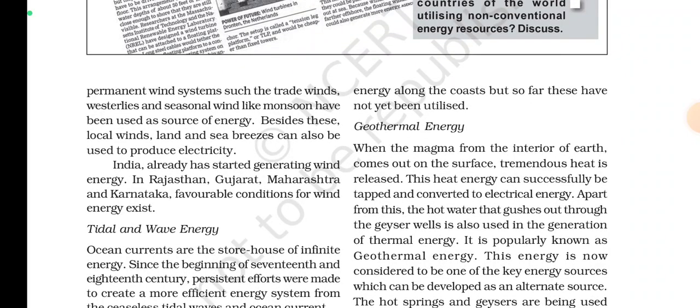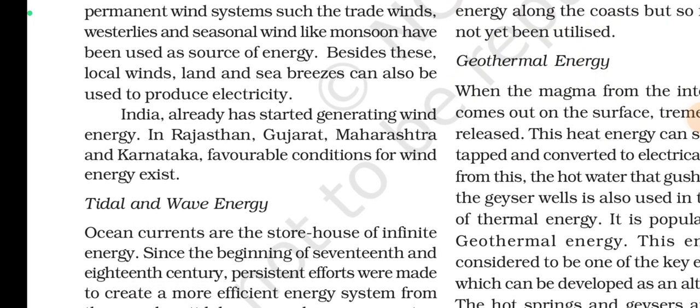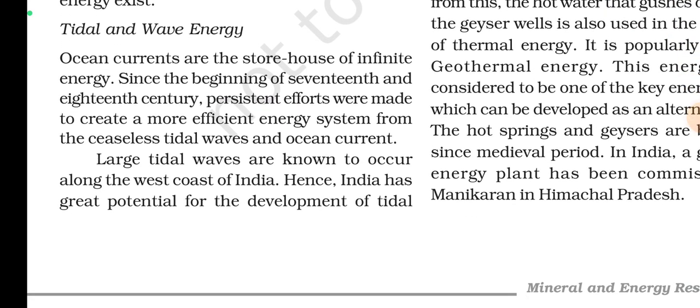Permanent wind systems such as trade winds and westerlies, and seasonal winds like monsoons, have been used as sources of energy. Besides these, local winds like land and sea breezes can also be used to produce electricity. India has already started generating wind energy; Rajasthan, Gujarat, Maharashtra, and Karnataka have favorable conditions for wind energy. Tidal and wave energy are also important sources.